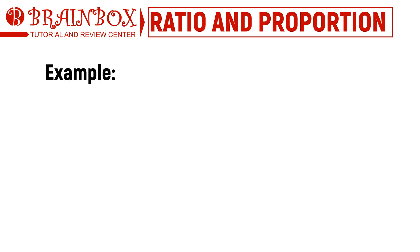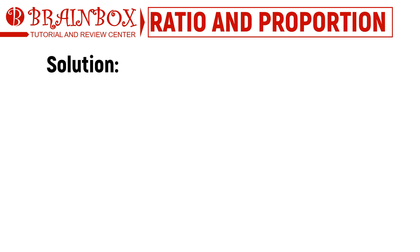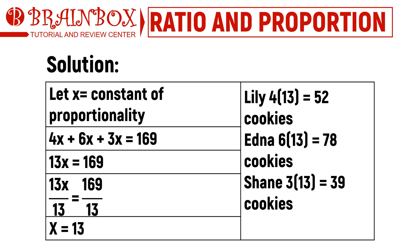Here is an example: Lily, Edna, and Shane were selling cookies at different locations. The number of cookies sold by each was in the ratio 4 to 6 to 3. If there are a total of 169 cookies sold, how many cookies were sold by Lily, Edna, and Shane, respectively? We let x as the constant of proportionality and affix the variable x to each partition. Adding all the terms and equating to the totality, we simplify and divide both sides by 13, giving x equals 13. Multiplying x to each partition, Lily, Edna, and Shane sold 52, 78, and 39 cookies, respectively.